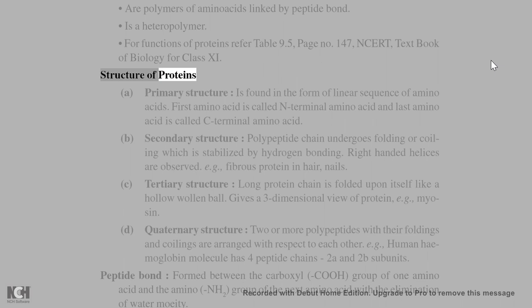Structure of proteins: Primary structure is found in the form of linear sequence of amino acids. First amino acid is called N-terminal amino acid and last amino acid is called C-terminal amino acid.